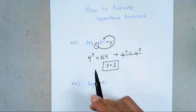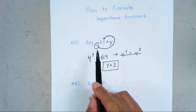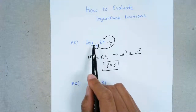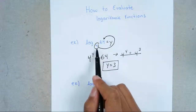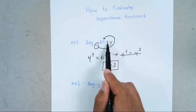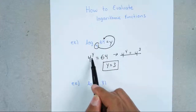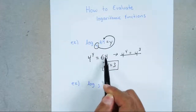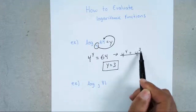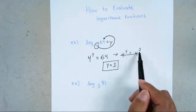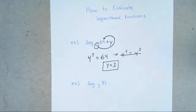So anytime they ask you to evaluate a logarithmic function, first change it to exponential form. Circle your base, go around: 4y equals 64. Then bring 64 down to this base — 4 to the third — cancel out the fours, and you get y equals 3 as your final answer.